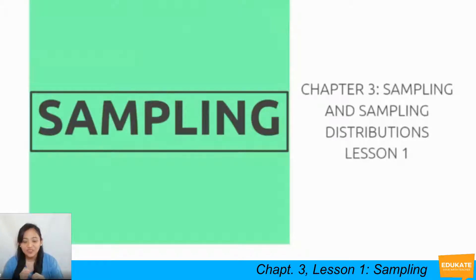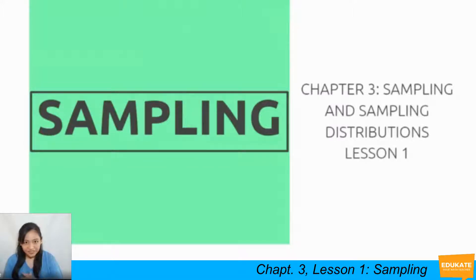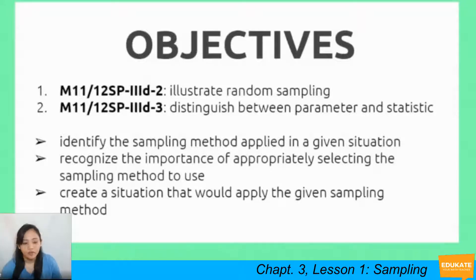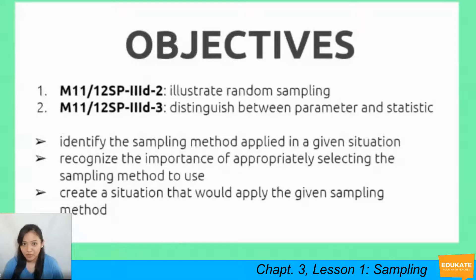We are now moving on to Chapter 3, which is Sampling and Sampling Distributions. This is the first lesson for Chapter 3: Sampling. Our objectives for today are to illustrate random sampling, distinguish between parameter and statistic, identify the sampling method applied in a given situation, recognize the importance of appropriately selecting the sampling method to use, and to create a situation that would apply the given sampling method.